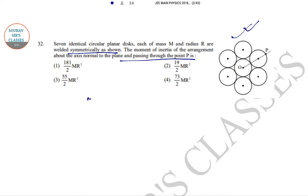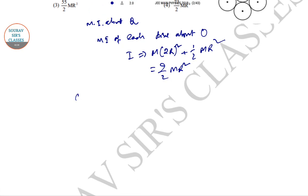So first we need to calculate moment of inertia about Q. The moment of inertia of each disk about O is I equals M into 2R² plus half MR². So simply this is 9 by 2 MR². So moment of inertia for all disks about O will be I net, that is 6 into 9 by 2 MR² plus 1 by 2 MR². So this will be 55 MR² divided by 2.